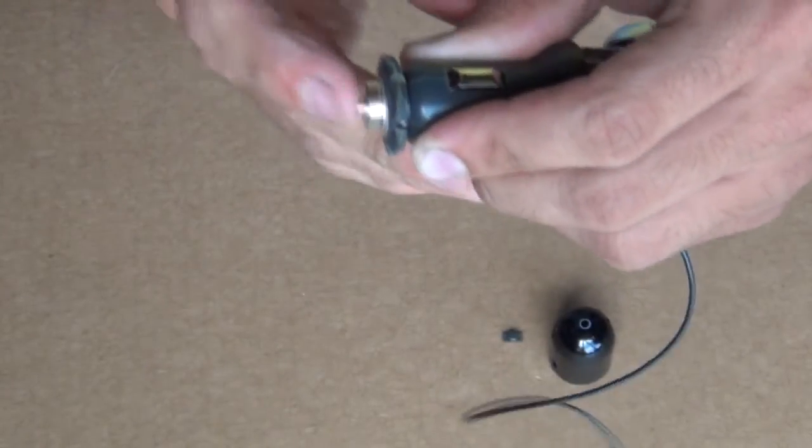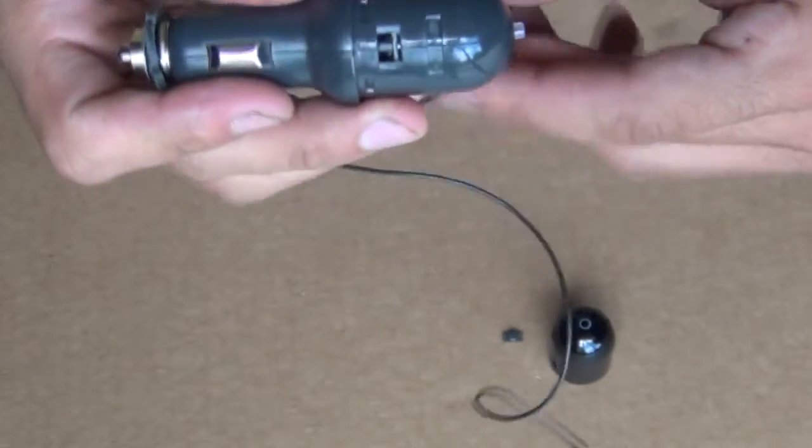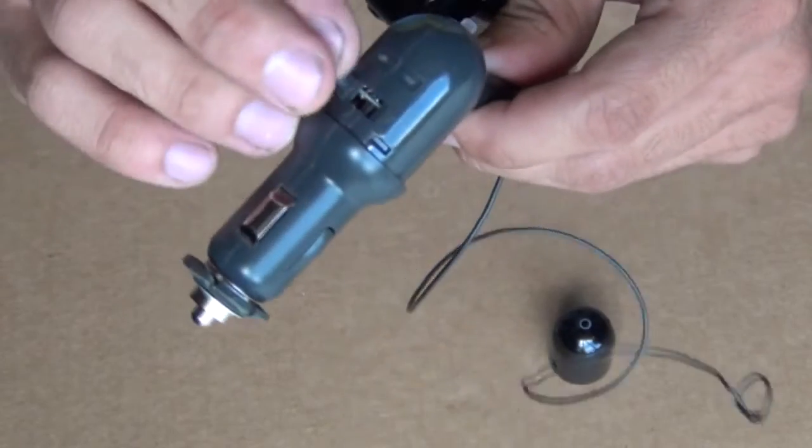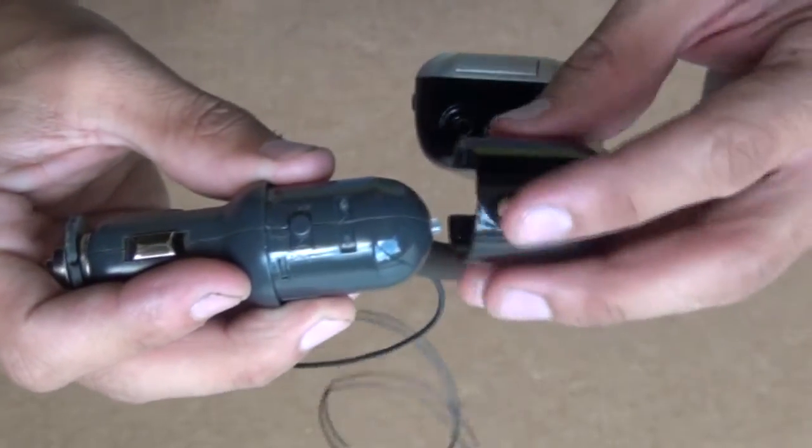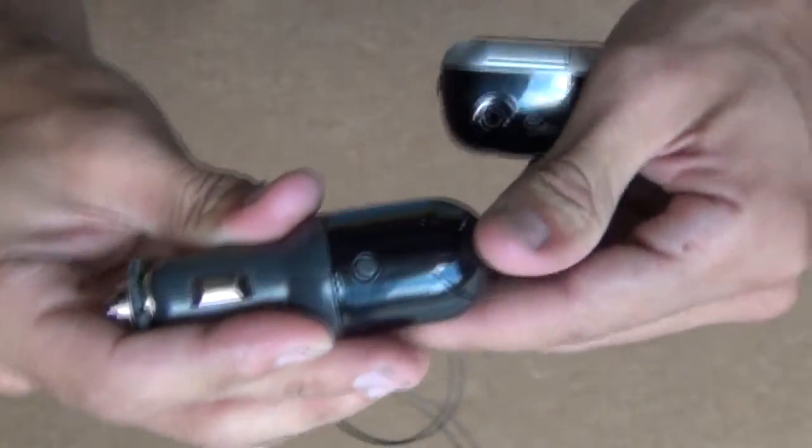Once that's in, you can just make sure that your spring is working on the small nipple, and once that's all good you can reinstall the little dimple on the top part of the case there and then slide the little sleeve back in place.